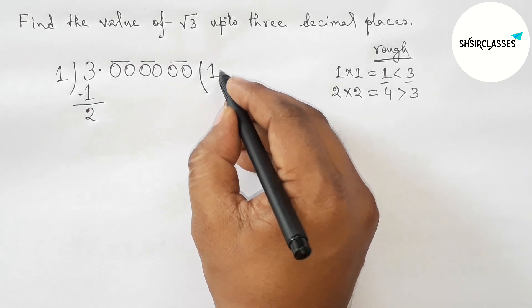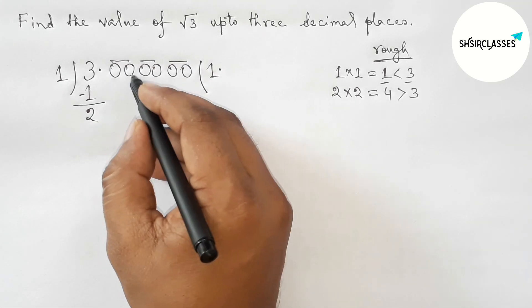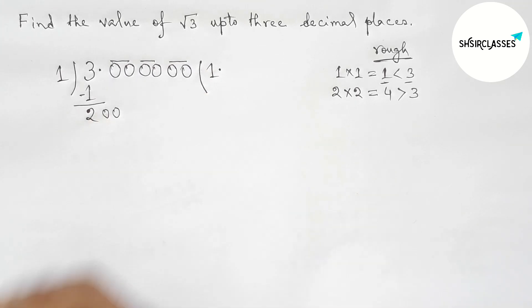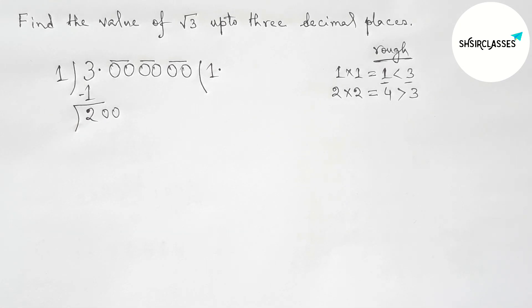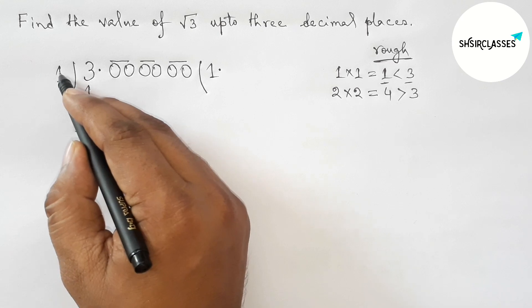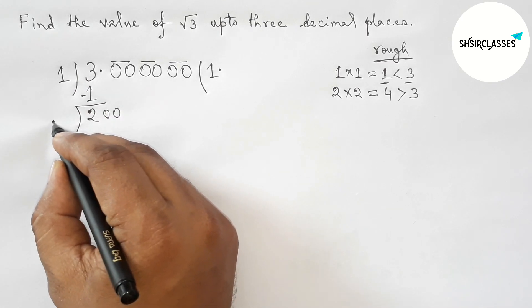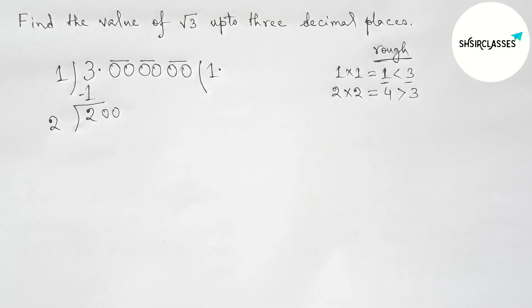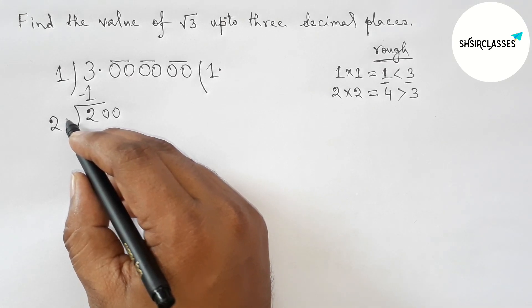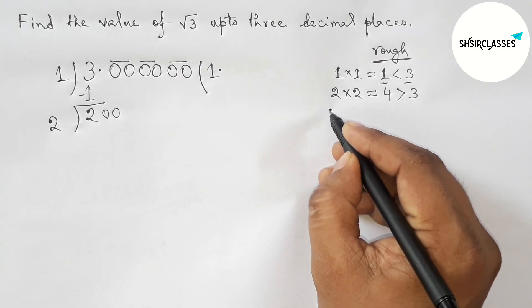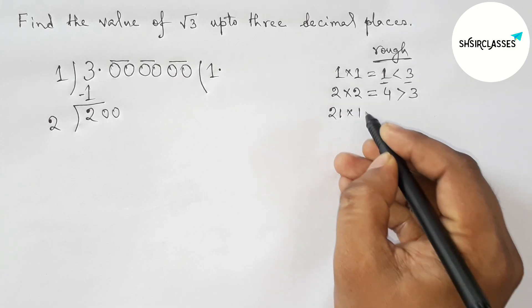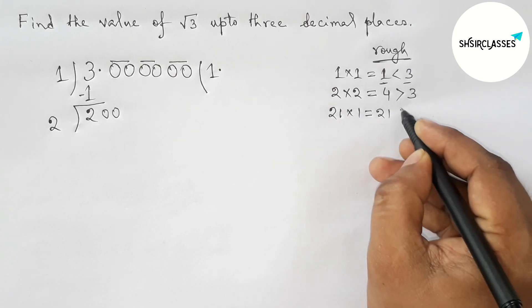Bring down the first pair of zeros and draw the division line. Next, take double of 1, which is 2, and we have to put a number beside 2, then multiply by that number such that the result is less than 200.